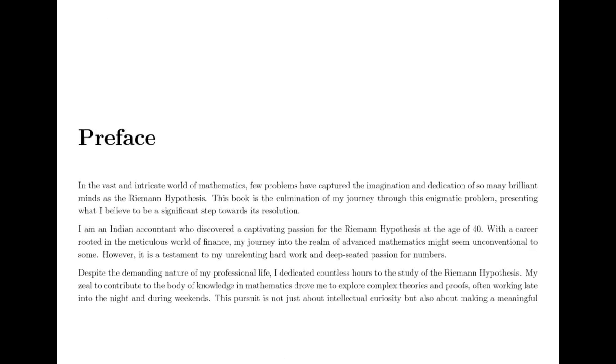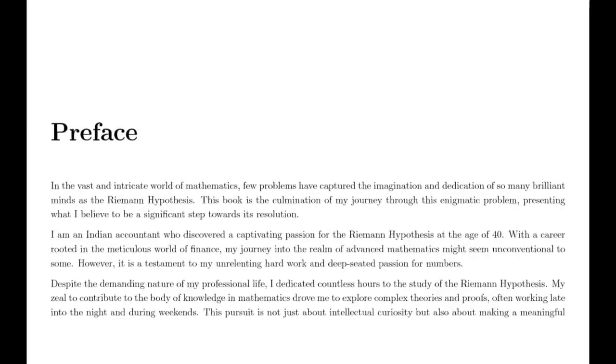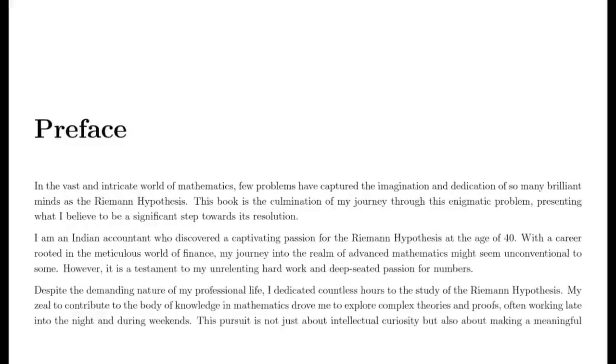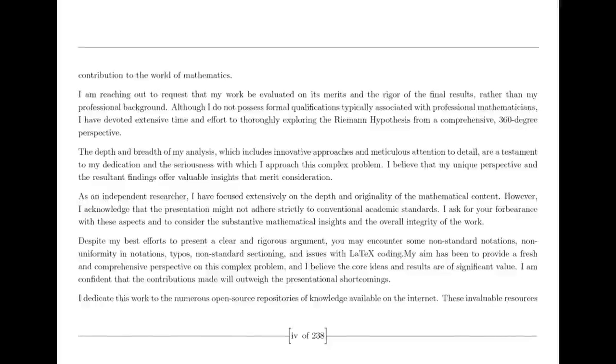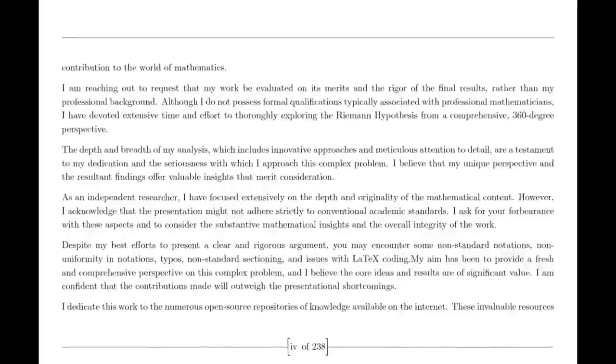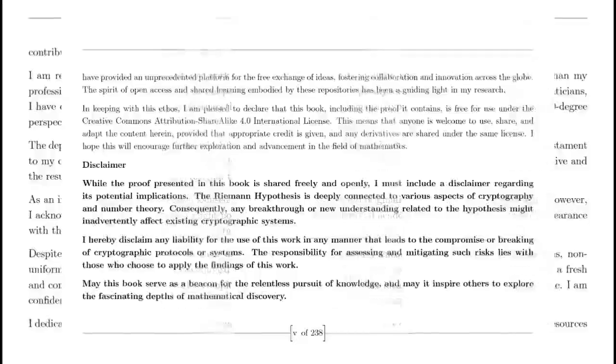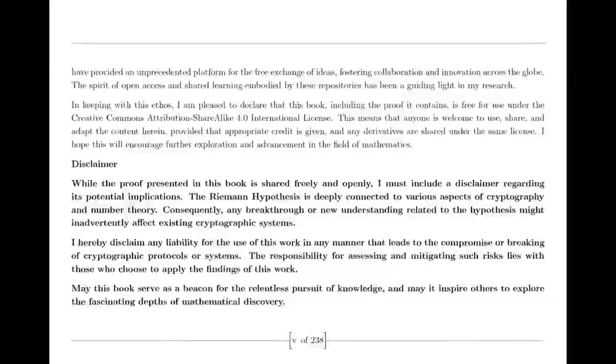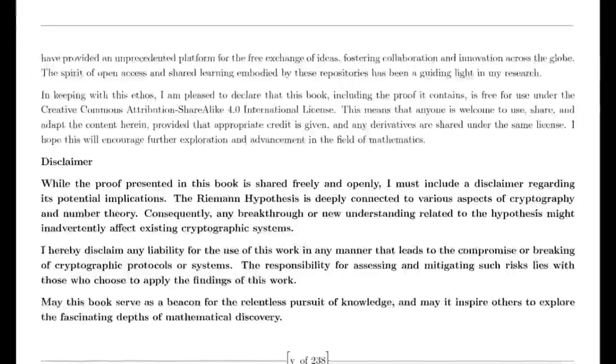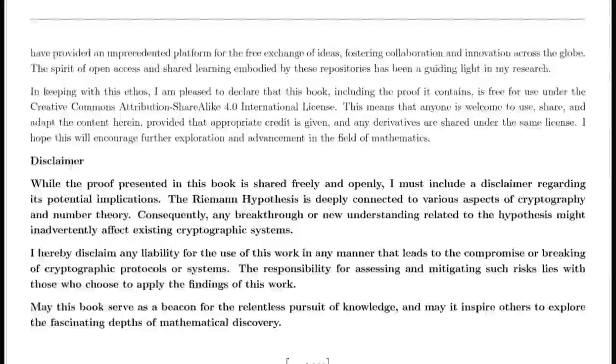We begin with the remarkable contributions of Leonard Euler. In the 18th century, Euler made groundbreaking discoveries in understanding infinite series. He introduced the idea that the harmonic series — the sum of the reciprocals of the positive integers — could be expressed as a product over prime numbers. This was a revolutionary insight linking the harmonic series to the complex and profound properties of prime numbers. Euler's formula was one of the first indications of the deep connections between primes and series.